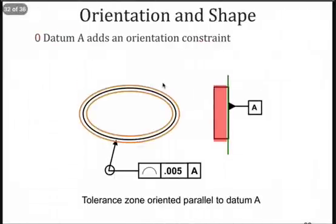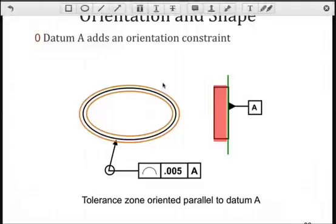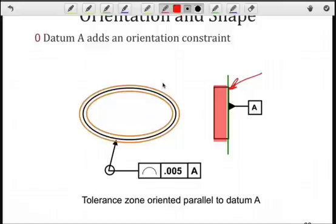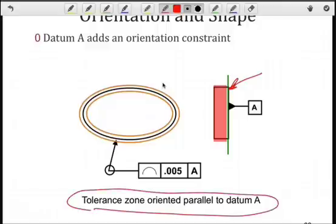Now, I'm going to add a constraint. I place datum A on the bottom surface here, so you should recognize that that represents a plane. So, I establish datum A. Now, that places a constraint on my tolerance zone, in that I have to orient it. Now, to determine the orientation, you have to understand what the design is telling you. In this case, as we can see, this 2D profile tolerance zone is going to be parallel to datum A.